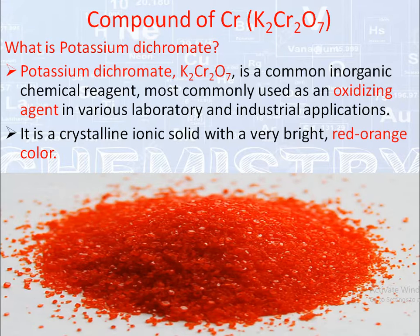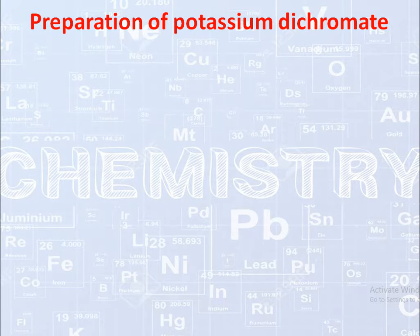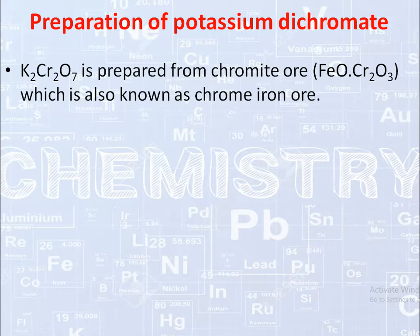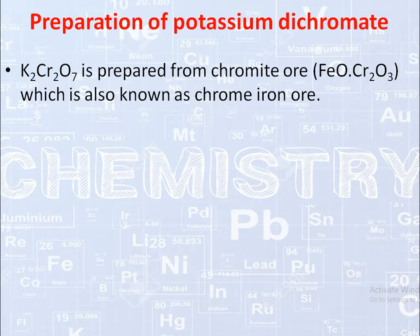As you can see here, this is potassium dichromate, which is crystalline and bright orange in color. Now let's move towards the preparation of potassium dichromate. It is manufactured using chromite ore. In the preparation of KMnO₄, pyrolusite ore is used, whereas here chromite ore is used. Potassium dichromate is prepared from chromite ore, also known as chrome iron ore, with the formula FeO·Cr₂O₃.